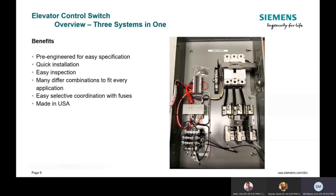What are some of the benefits of the switch? The switch being a three-in-one system allows the builder or contractors to meet multiple different codes. It's easy for everybody — from the consulting engineer putting it into the spec, to the installer, and even the inspector. You just have one component that satisfies all those needs, so it makes everybody's life a little bit easier. Because everything's contained in the box, there's no need to add additional components. The contractor sources this box, installs it, terminates some wires to it, and that's all they have to do. The elevator control switch is highly configurable, so it will meet all different types of applications.